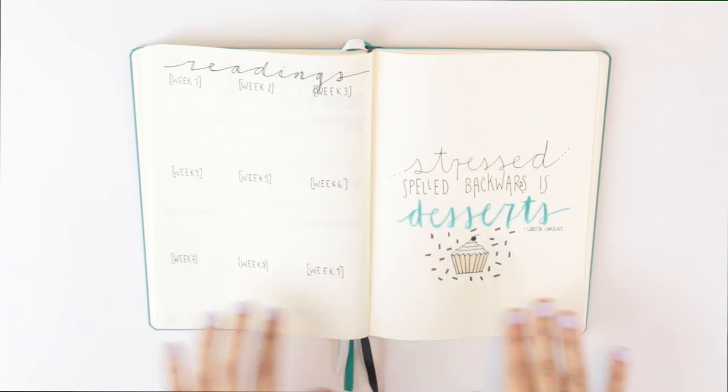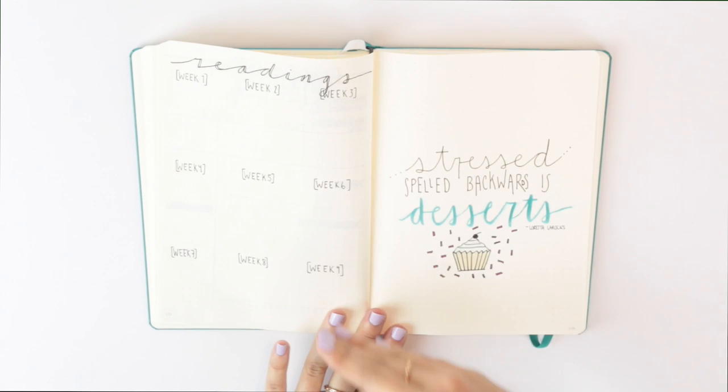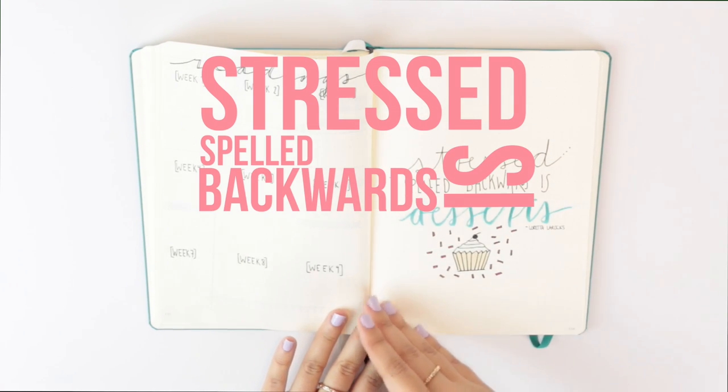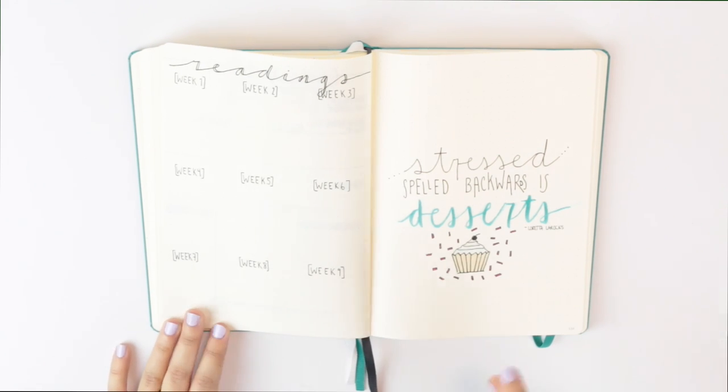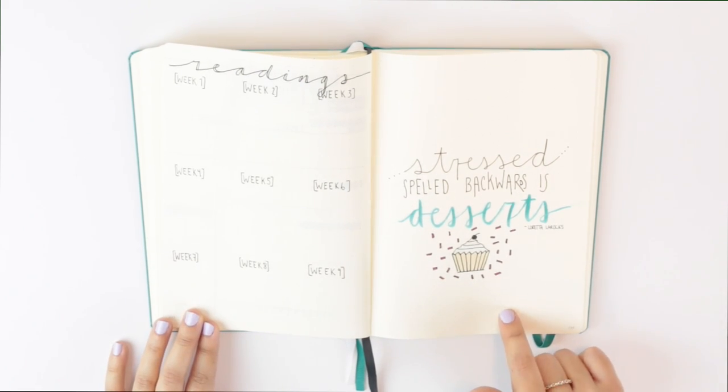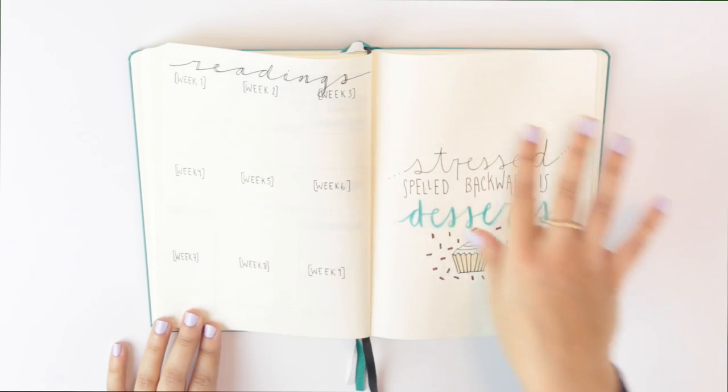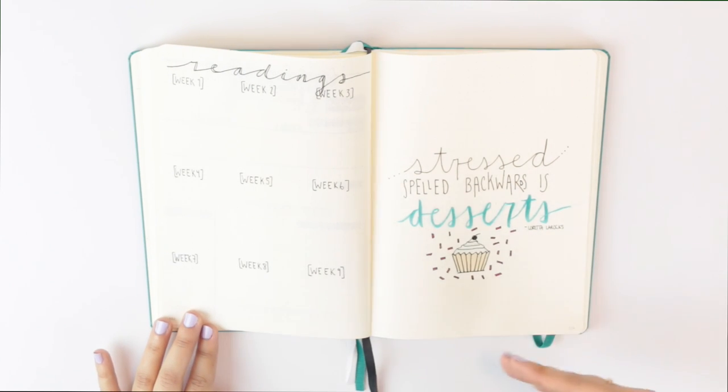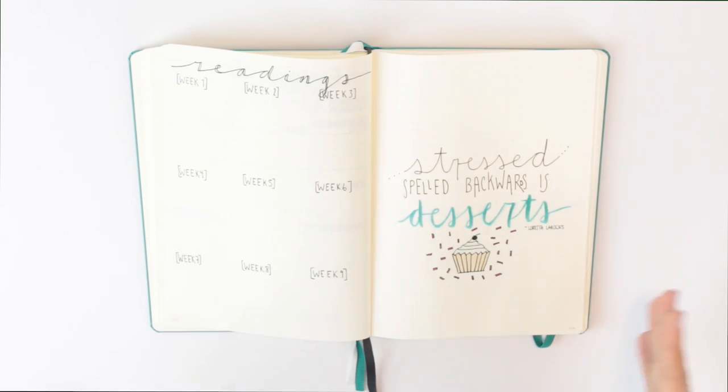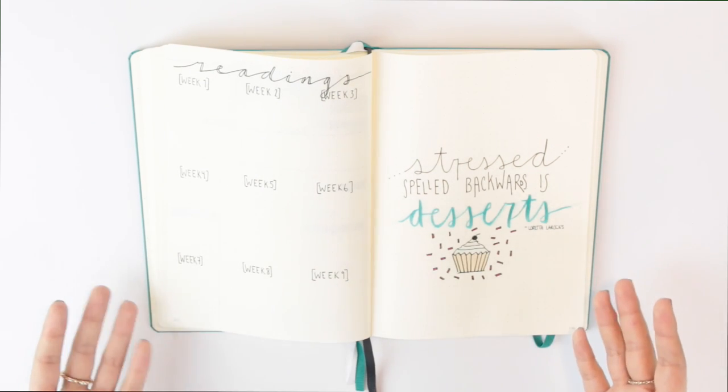And then to the right here I finished off with this fun quote that says stressed spelled backwards is desserts. I'm so prone to being stressed over the most minuscule things when it comes to school, and it's one of the qualities that I hate most about myself and I really want to work on this year. Just be a little bit more zen. Chill out a bit. Because honestly, all this school stuff, as much as it seems like it matters, and not to say that it's not important to do well in school, but if you don't do so well on a test or in a course, it isn't the end of the world.